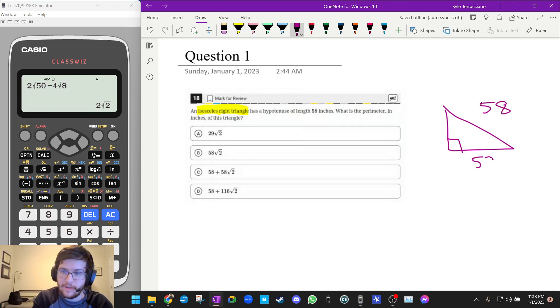And basically this problem asks you to set up a triangle that looks like this: 58 and you get 58 over square root 2 and 58 over square root 2. So it asks you to find the perimeter.